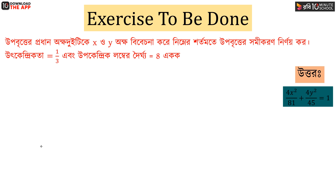There is 4x squared divided by 81 plus 4y squared divided by 45 equal to 81. That's what we're going to do in the next video. So in this video, we will see the R1 type of example. Thank you very much for watching.